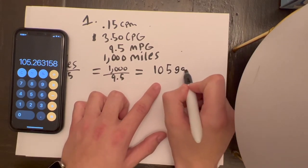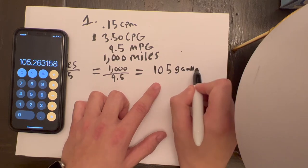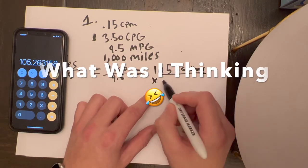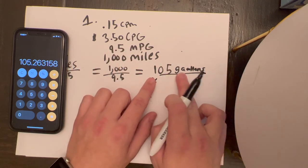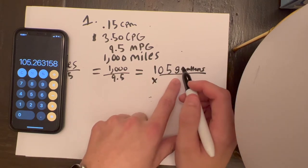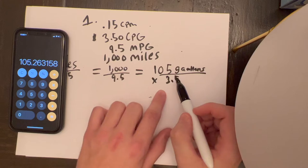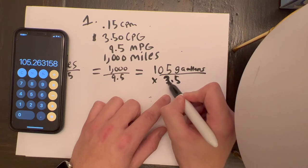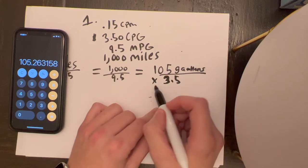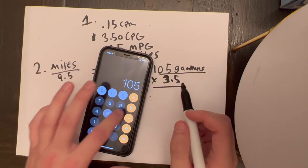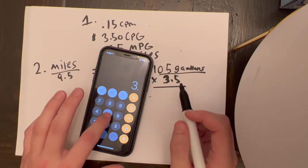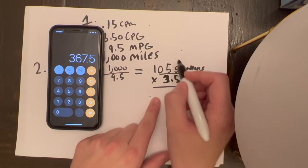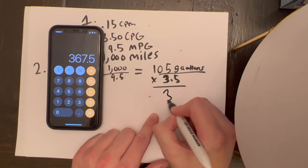This is how many gallons that you used to make it 1,000 miles with this MPG. It took you 105 gallons, just 105 to keep it simple. So 105 gallons. We're going to multiply that, disregard the division sign. We're going to multiply 105 gallons times 3.5, which is your average cost per gallon. If you got a fuel card or something, you should have a manager where you can look and see your average cost per gallon. 105 times 3.5 gives us $367.50.